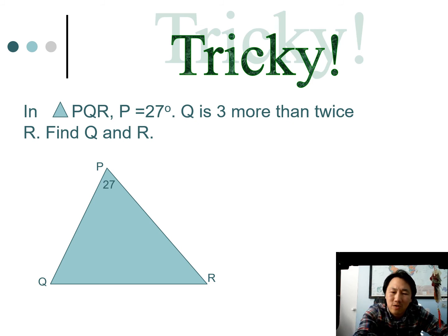Three more than twice R looks like this: three more, that's a plus 3, and then twice R is 2R. And then the question is, well what do I label R? Well R is just R. All right, from there use the triangle sum theorem. Take all of those three, add them together, and they should equal 180.